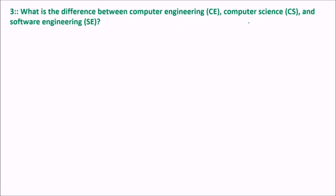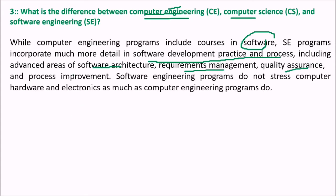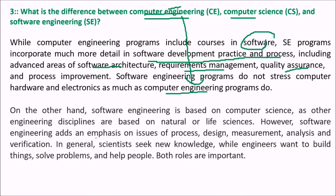What is the difference between computer engineering, computer science, and software engineering? They all seem to be the same. Computer engineering includes courses in software, but software engineering incorporates much more detail in software development practices and processes, including advanced areas of software architecture, management, quality assurance, and process improvement. Software engineering programs do not stress computer hardware and electronics as much as computer engineering programs do. Software engineering is based on computer science as other engineering disciplines are based on natural sciences. It adds emphasis on process design, measurement, analysis, and verification. Scientists seek new knowledge; engineers want to build things and help people — both roles are important.